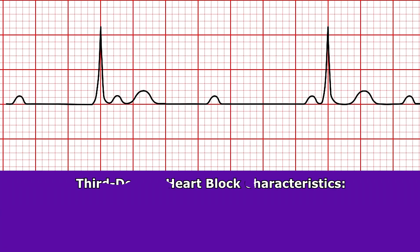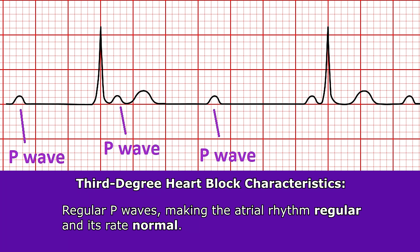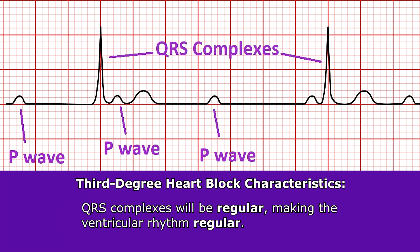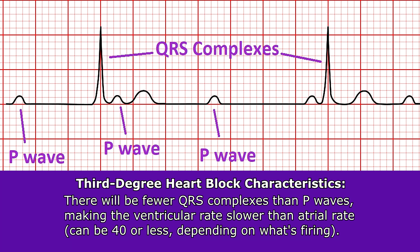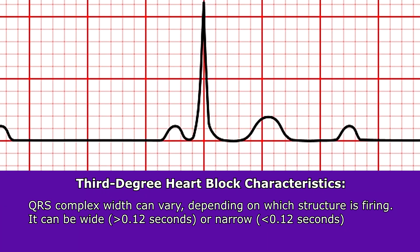When looking at the characteristics and criteria to determine if this is a third degree heart block, you're going to see regular P waves making the atrial rhythm regular and its rate normal. The QRS complexes will also be regular, making the ventricular rhythm regular, but there will be fewer QRS complexes than P waves, so the ventricular rate will be slower than the atrial rate — it can be 40 or less depending on what structure is firing for the ventricles. The QRS width can vary and be narrow or wide, greater or less than 0.12 seconds.